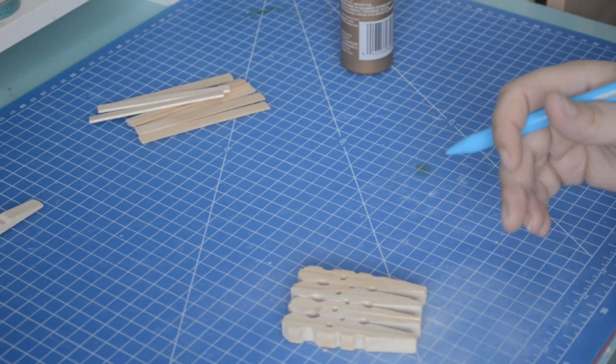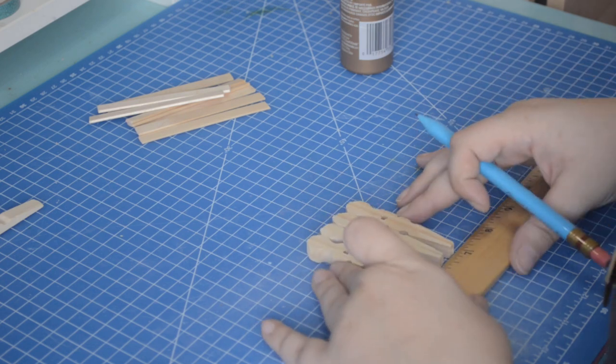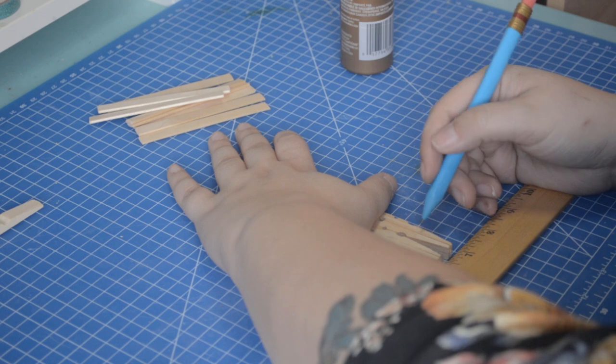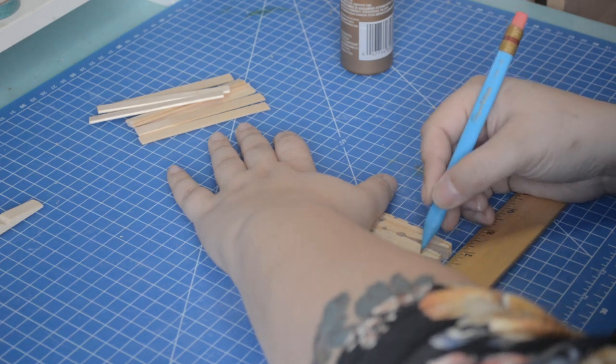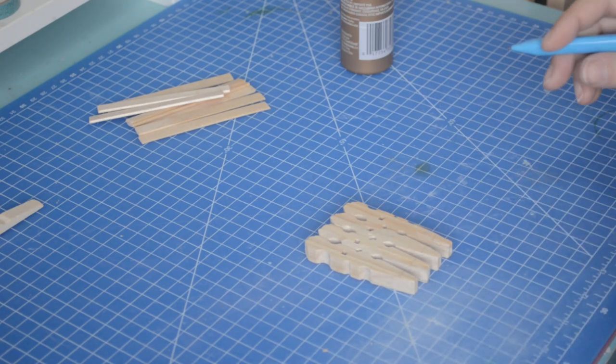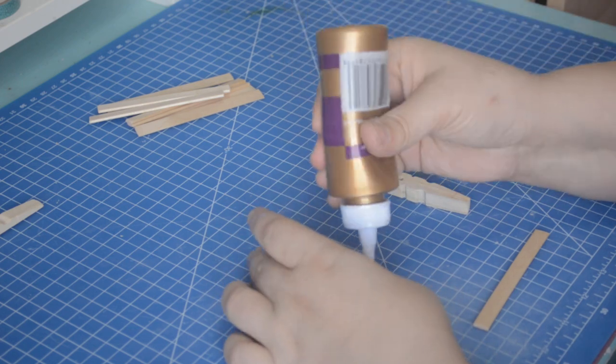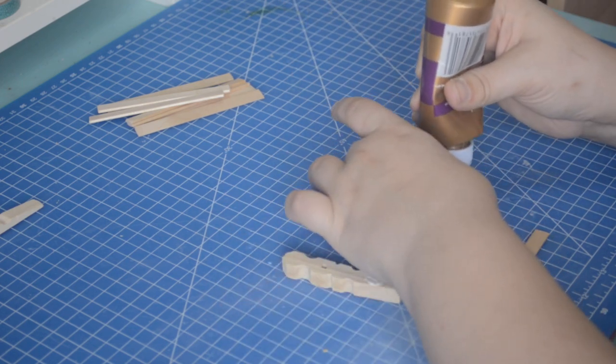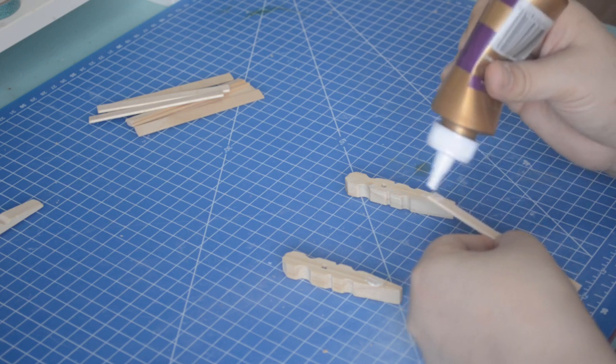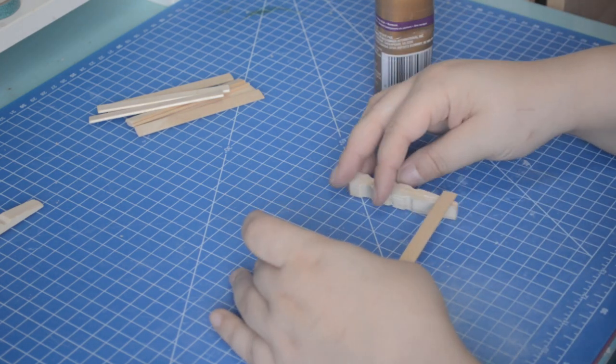Figure out the height of the bed frame and mark it on all four of our bed posts. To assemble the headboard and footboard, we are taking one of our popsicle sticks and gluing it on top of two bed posts. Then set it aside to dry. Don't touch it.